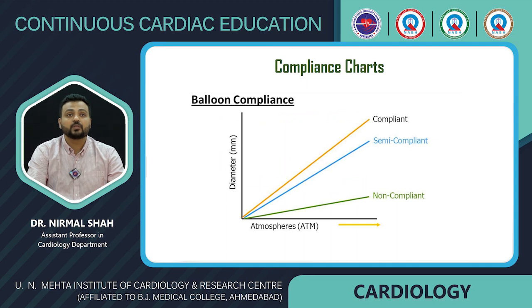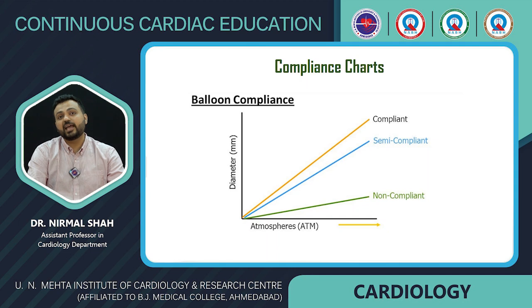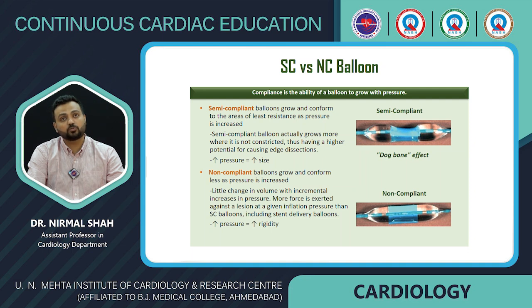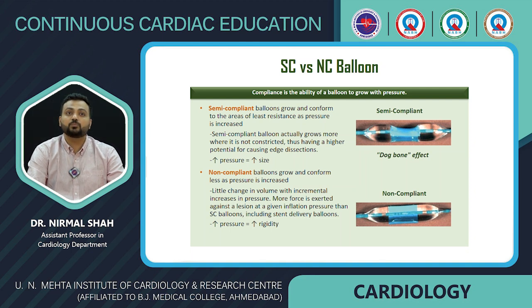Non-compliant balloons typically offer poor rewrap. Nominal pressure is 10–12 atmospheres and rated burst pressure is 18–20 atmospheres, ideal for post-dilatation. They are made of polyethylene terephthalate (PET) with thicker balloon walls, allowing work at higher pressures. The compliance comparison chart shows that as atmospheric pressure increases, diameter growth increases more with semi-compliant and compliant balloons compared to non-compliant balloons.